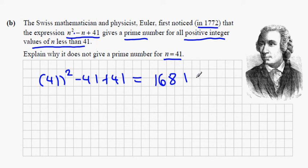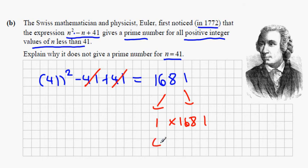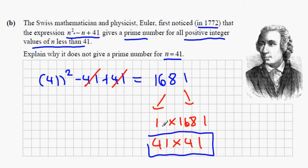The minus 41 and the plus 41 cancel each other off. The reason why it's not a prime number is it has factors: 1 multiplied by 1681, but it also has the factors 41 multiplied by 41 — a second set of factors. Prime numbers only have two factors: the number itself and 1. This number has a second set of factors, so it's not a prime number.